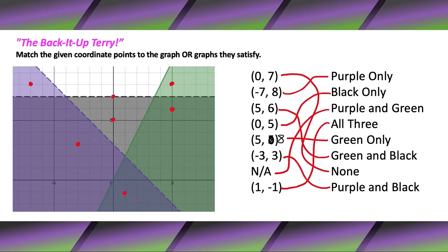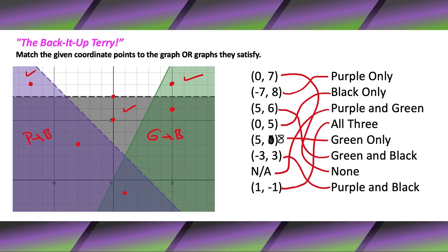That's about it. Just go one corner point at a time — hopefully you don't have any screw-ups like I did. Try to section them out: which ones are green only, black only, purple only, purple and black, green and black, all three, or none. If you go through and do all those sections, that'll make life very easy for you. Just take your time, go one corner point at a time, and everything will be okay. See you in class.